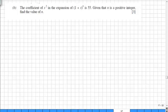In part b, we are given that the coefficient of x squared in the expansion of 1 plus x to the n is 55. Given that n is a positive integer, find the value of n.